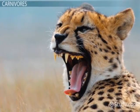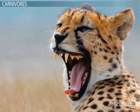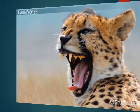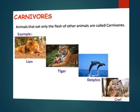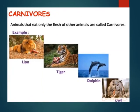Let's learn about some interesting facts about carnivores. Carnivores are the animals that eat only the flesh of other animals. Some examples of carnivores are lion, tiger, dolphin, and owl.